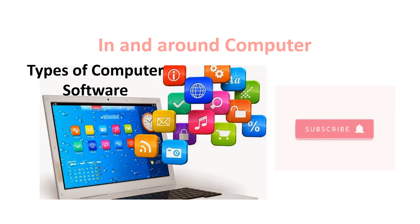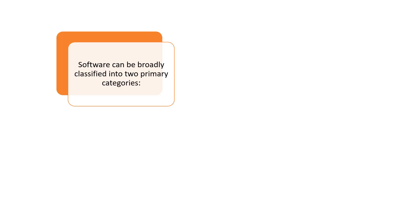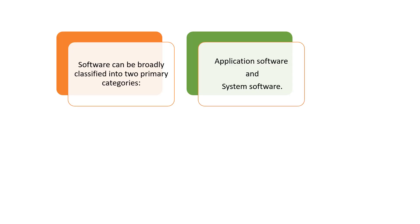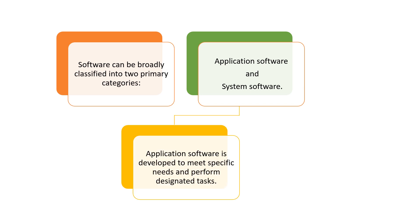Hi, welcome to In and Around Computer. In this video, we are going to see the types of computer software. Software generally can be classified into two types: application software and system software.